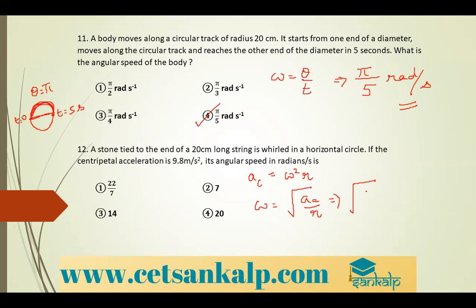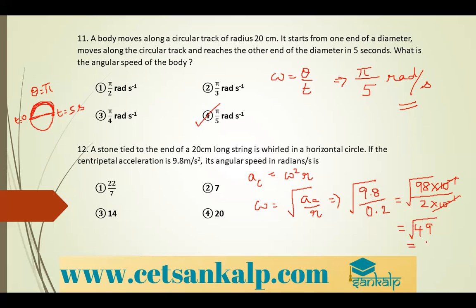Substituting: root of 9.8 divided by 0.2 meters. This gives root of 49, which equals 7. So the answer is 7 radian per second, option 2.